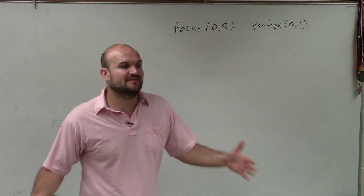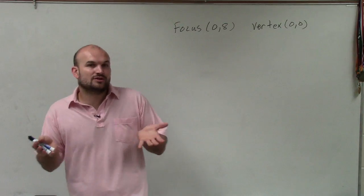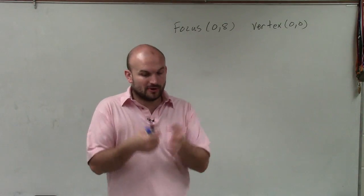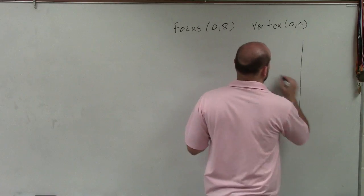So the first thing we want to do is identify, where is the axis of symmetry? Is that horizontal or vertical? Where does the graph open up? Left or right, up or down? So first thing we need to do is just identify where the graph is going to be looking.